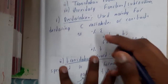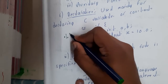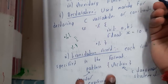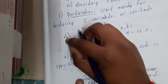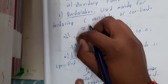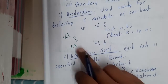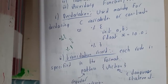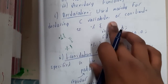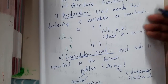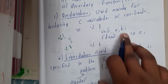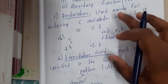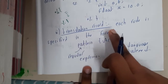The declaration block is enclosed using percentage open curly bracket and percentage close curly bracket — the whole declaration code is written inside. It is used mainly for declaring C variables, constants, and even header files. For example: %{ int a, b; float x = 10; %} — in this way the declaration is done.